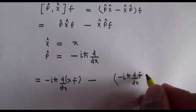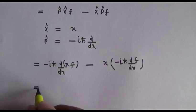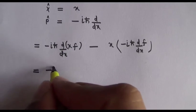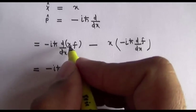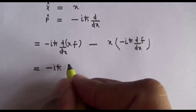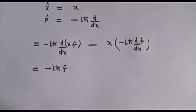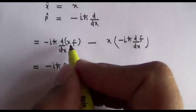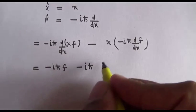For the second term, -iℏ d/dx(xf) multiplied by x. Now differentiating: -iℏ times d/dx of (xf) — differentiating with respect to x keeping f constant gives f, and -iℏ times differentiating with respect to x keeping x constant gives x·df/dx.